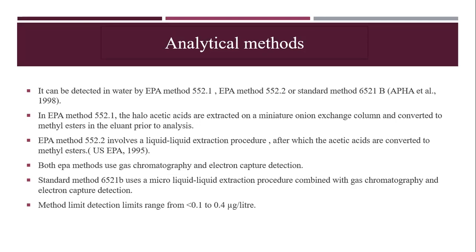EPA method 552.2 involves a liquid-liquid extraction procedure, after which the acetic acids are converted to methyl esters. Both EPA methods use gas chromatography and electron capture detection. The standard method involves a micro liquid-liquid extraction procedure combined with gas chromatography and electron capture detection. Method detection limits range from 0.1 to 0.4 microgram per liter.